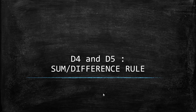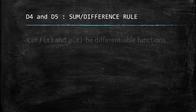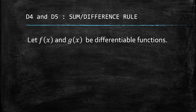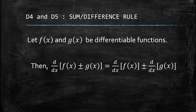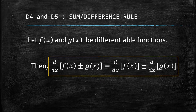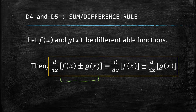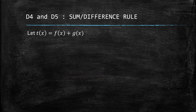We are now on the fourth and fifth basic differentiation rules: the sum and difference rule. If we have f(x) and g(x) as differentiable functions, then the derivative of f(x) plus or minus g(x) is equal to the derivative of f(x) plus or minus the derivative of g(x). So the derivative of a sum or difference of two functions is just the derivative of each function — we can actually separate them.